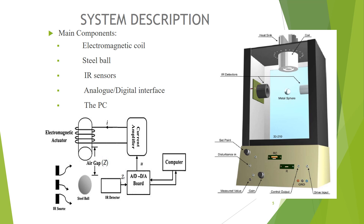In the computer there is the controller. The controller produces the control signal based on the feedback signal, which is sent to the current amplifier through the analog-to-digital board. The current amplifier, based on the control signal, manipulates the current in such a way that the required lifting force is generated and the ball is levitated at the desired position over the entire range of positions.